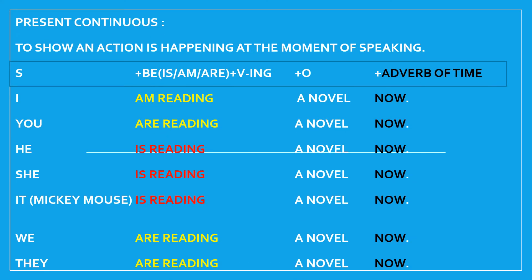Hello, today we will study about the present continuous tense. Present continuous tense is used to show an action that is happening at the moment of speaking — an action that is in progress at the moment of speaking.